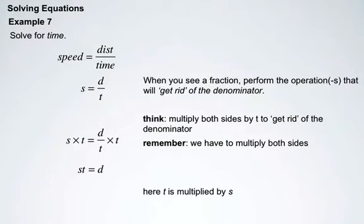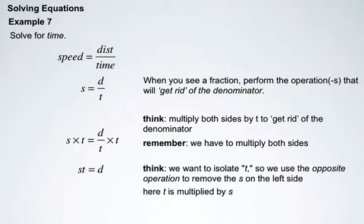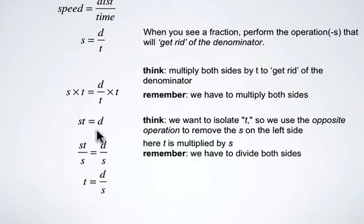Here t is multiplied by s, so we're going to isolate t by using the operation to remove the s by dividing s on both sides. So after we do that, s divided by s is 1, it cancels out, we're left with t, and d divided by s is on our right-hand side. So t equals d over s. So the formula is solved for t. Time is distance divided by speed.